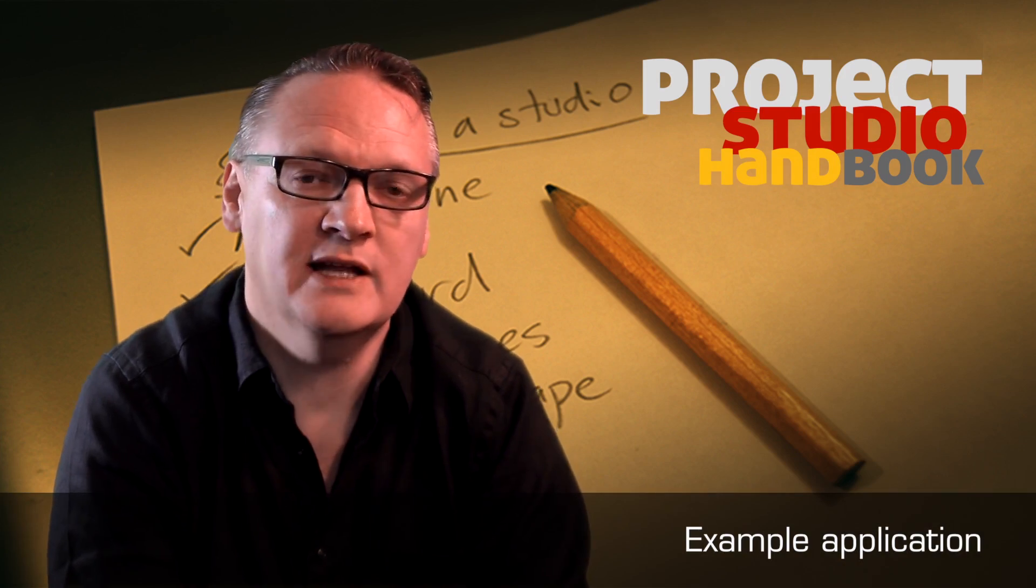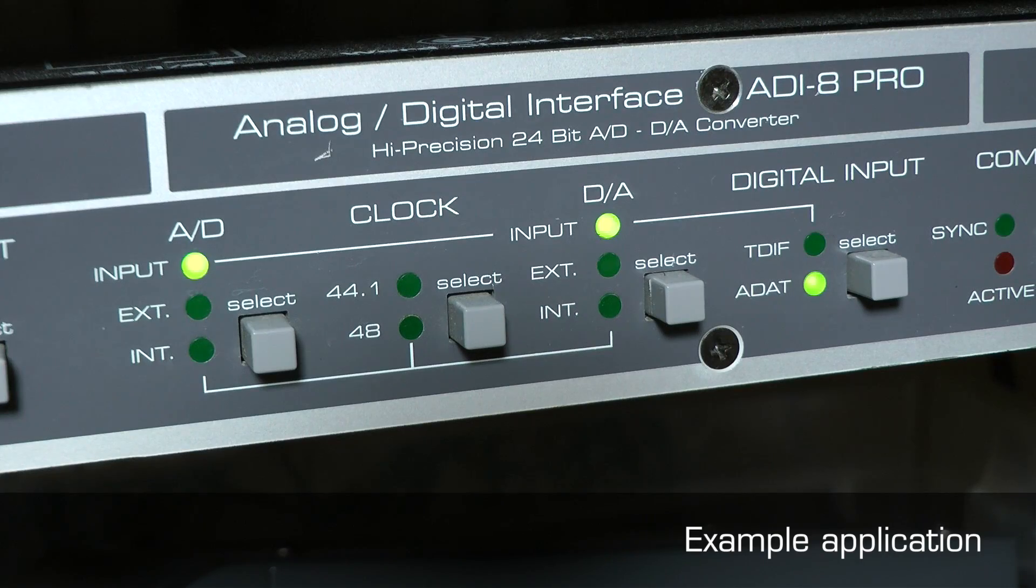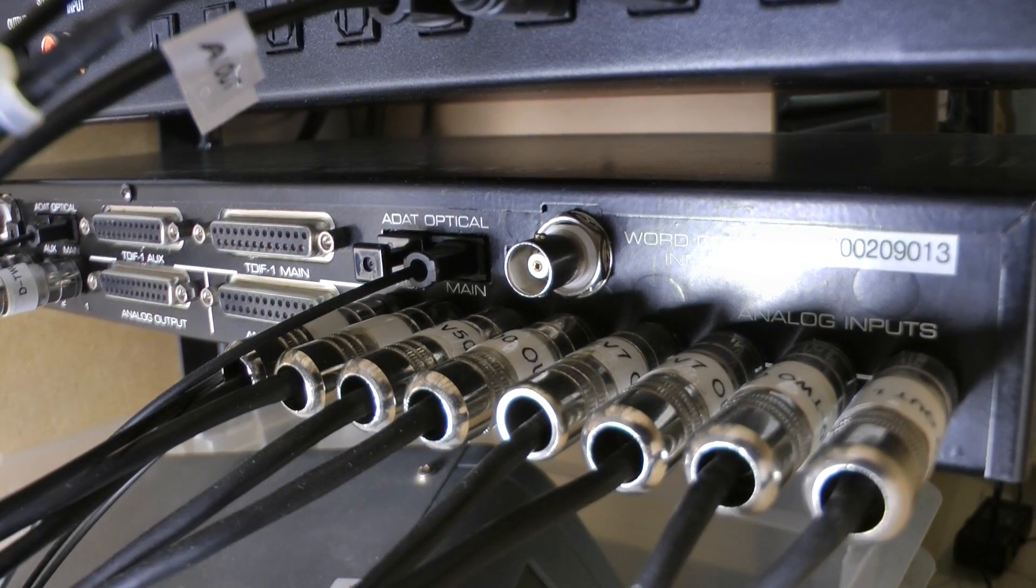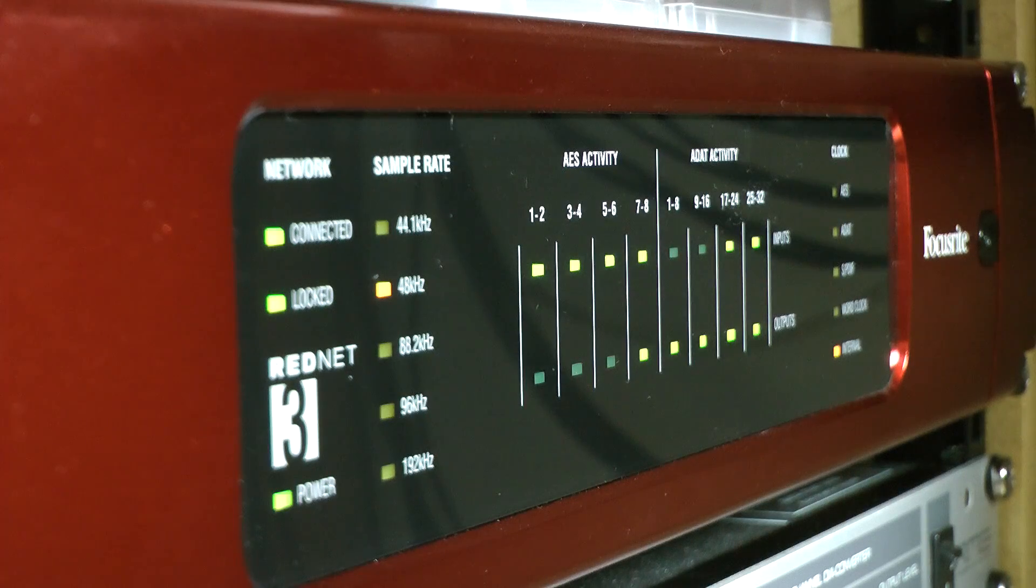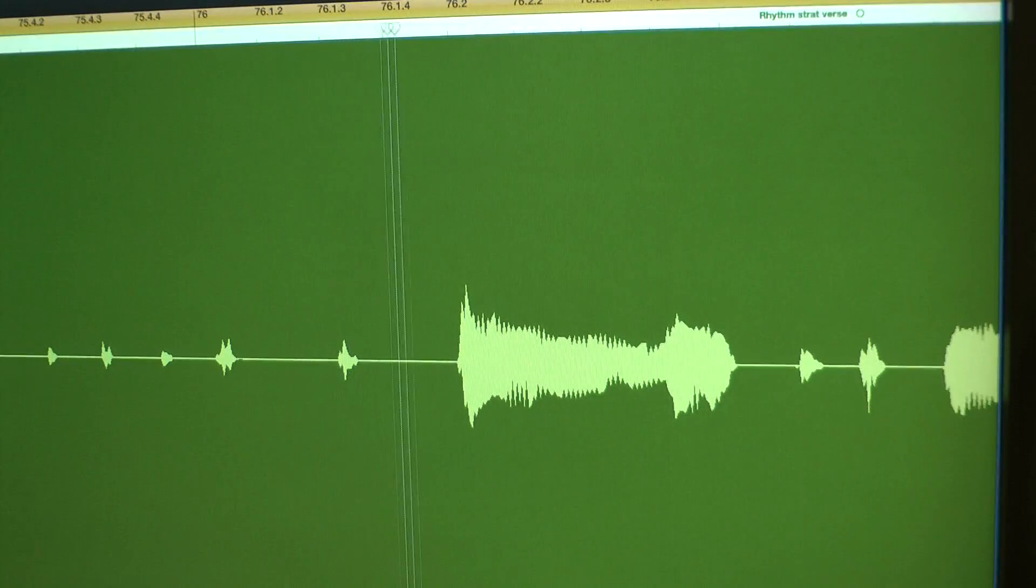This is an eight channel analog to digital converter which can be fed with any line level signal. Its ADAT light pipe output is connected to an audio interface from which signals can be sent to a DAW to be recorded.